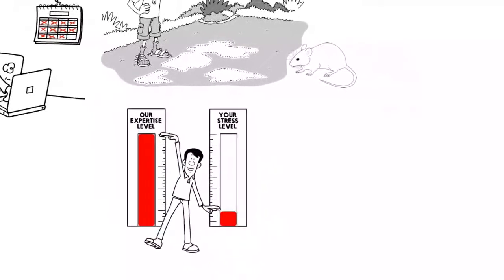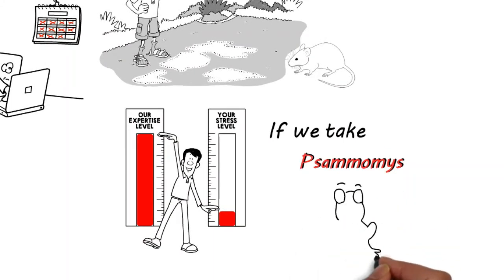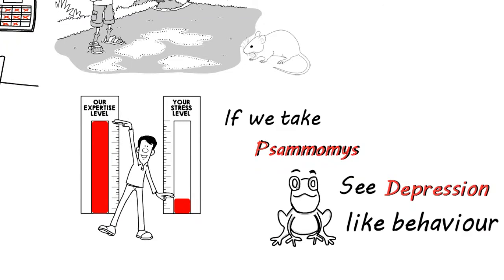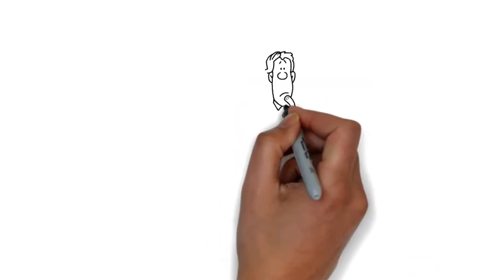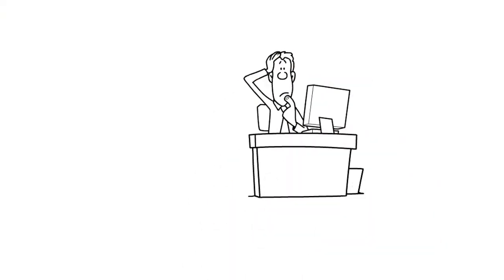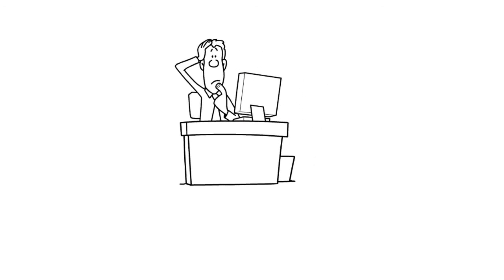In contrast, if we take Samomis or other diurnal species and reduce their daylight hours, we'll see depression-like behavior. This disease is very difficult to understand and treat, since we don't have a suitable animal to model or test.